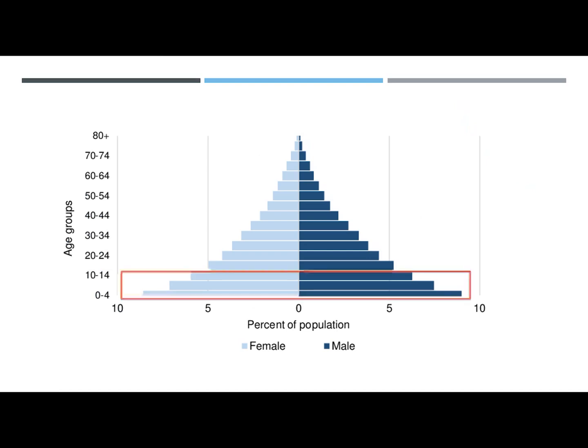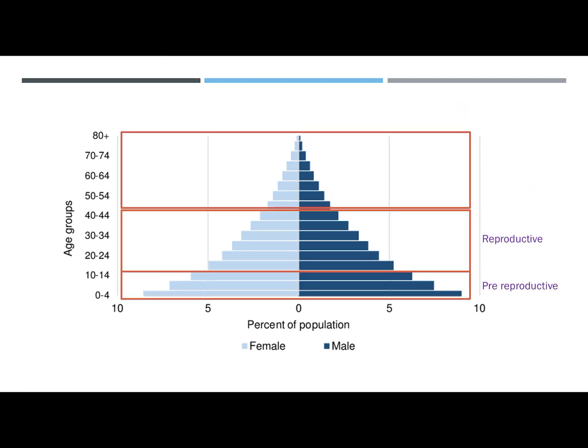Here is an age structure diagram. We have it split into groups of population. The bottom is our pre-reproductive — these are individuals who are not yet reproducing but will be, and this is the 0 to 14 age group. We've got the middle segment from 14 up to about 45 or 50 — that is our reproductive age group. And then at the top we have our post-reproductive age group. The sizes of these age groups is very telling about what's going on inside a population.